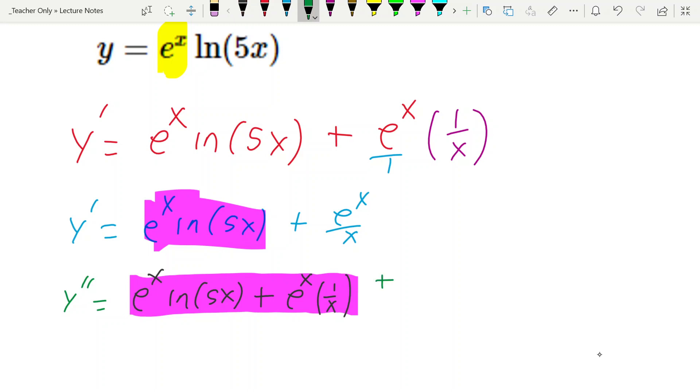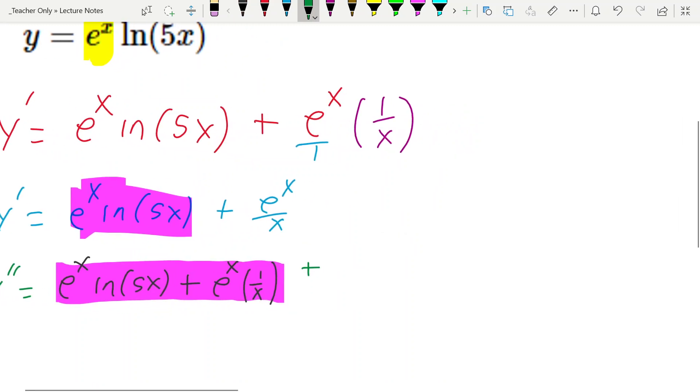Okay, so we're going to say plus. Now, what is the derivative of e to the x divided by x? Well, that's a quotient rule. So we're going to say it's low times the derivative of the numerator. So denominator times the derivative of the numerator, minus the numerator times the derivative of the denominator, all over the square of the denominator.